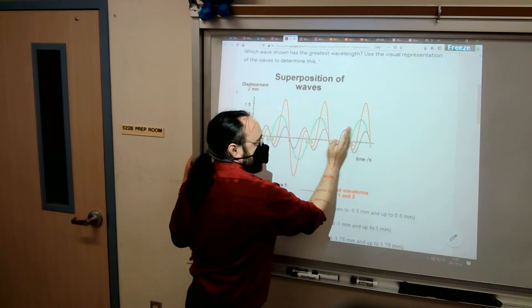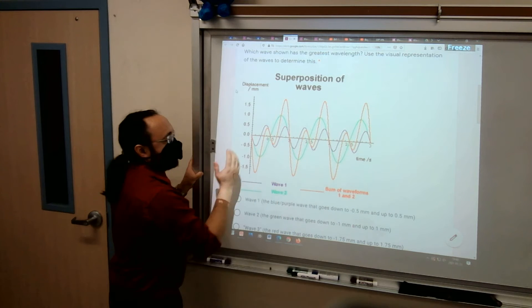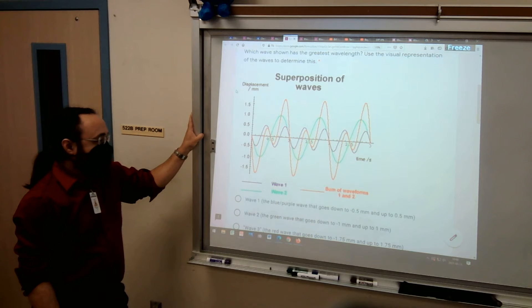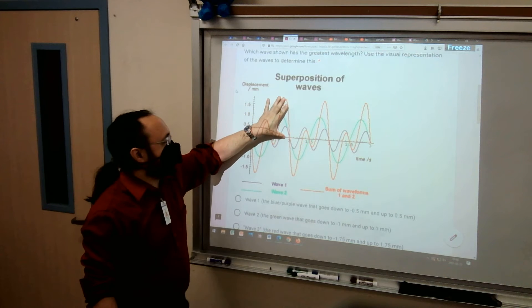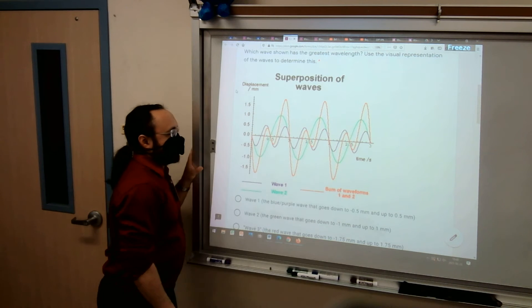Because the red one has the shortest wavelength, that means it has the greatest frequency. If all these are traveling at the same speed, it takes the green one longer to go, but not as frequently. And the red one has the tallest amplitude. Amplitude is measured from the equilibrium point to the highest point, maximum displacement from the equilibrium point.